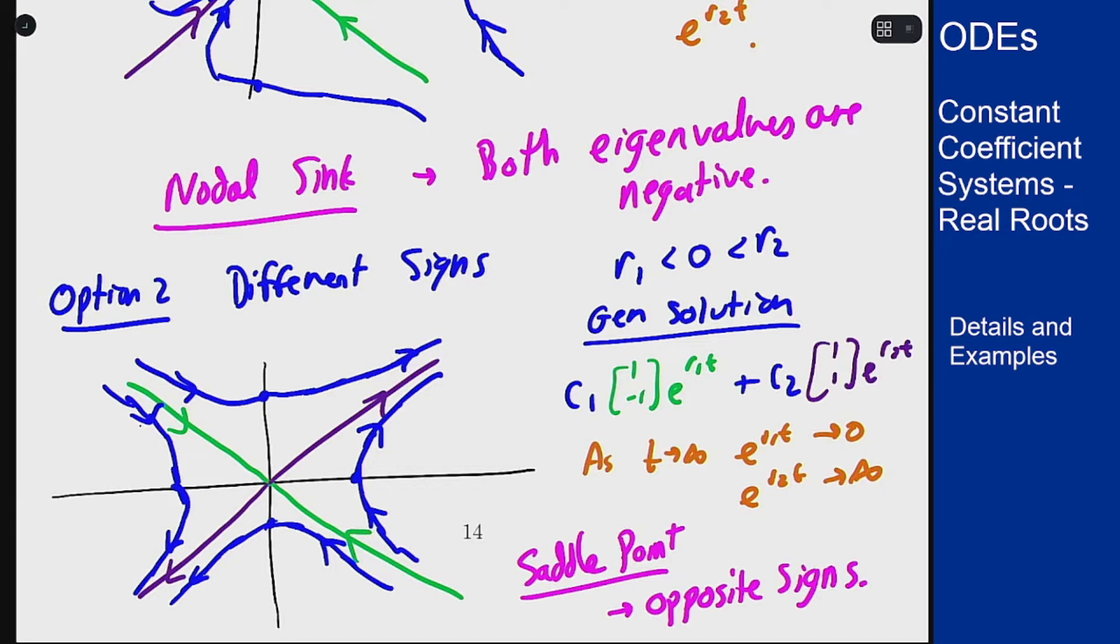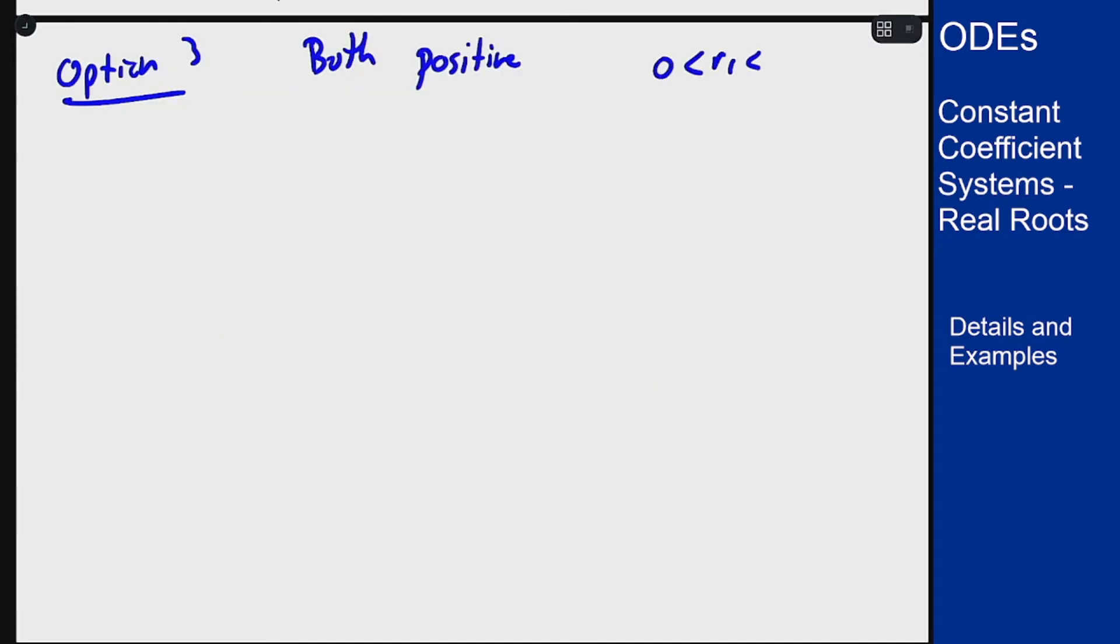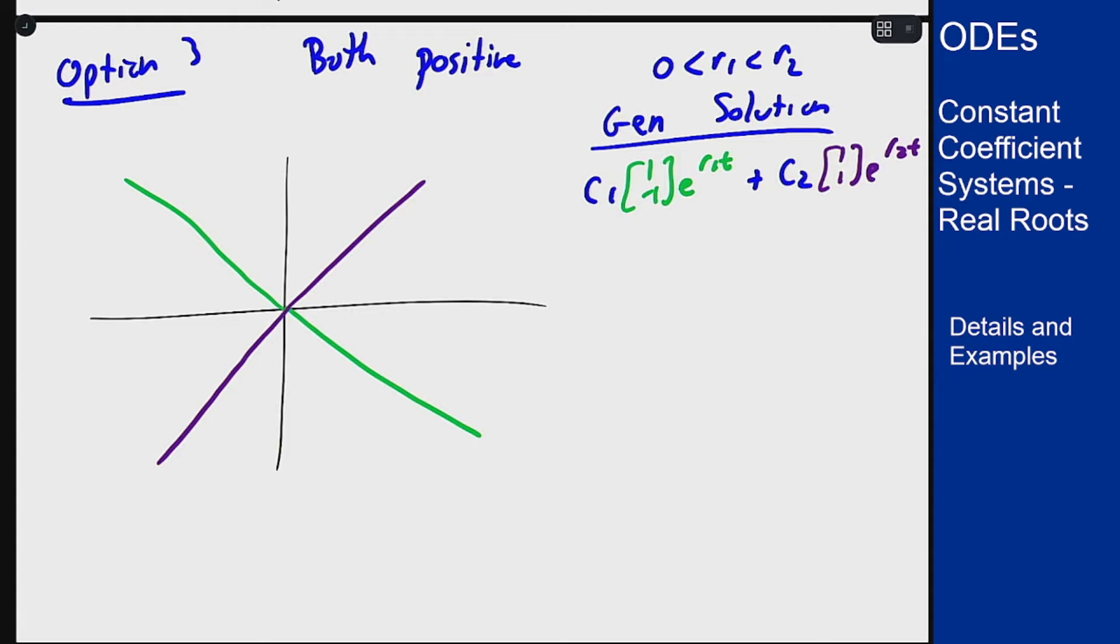This is when you have opposite signs and you can probably guess what option three is. It's when they are both positive. So we again have zero less than r1 less than r2 with our general solution and our same straight lines as before but now since both eigenvalues are positive everything here is going away from the origin.